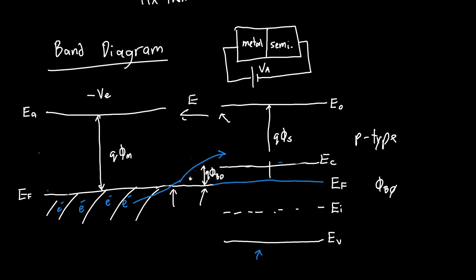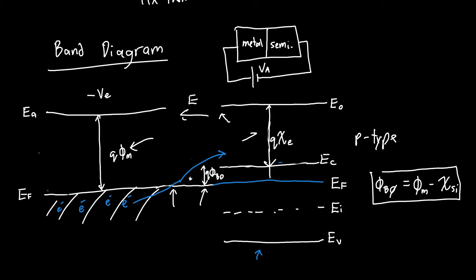What is this barrier height φ_b0? It's just equal to q·φ_m minus q·χ — where χ is the electron affinity, the distance between the vacuum level and the conduction band. So it's just φ_m minus χ of our semiconductor, let's assume it's silicon. And this is going to be true in general, even when the Fermi levels are not equal.